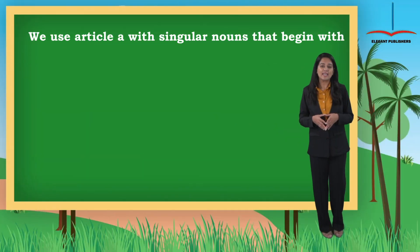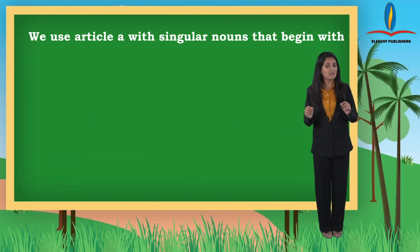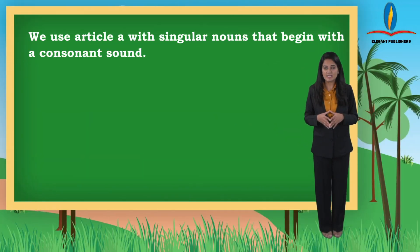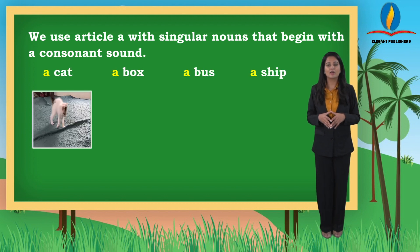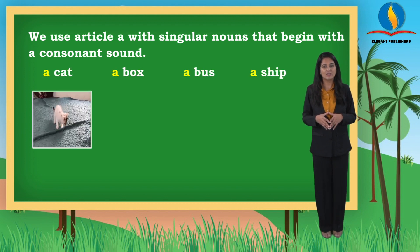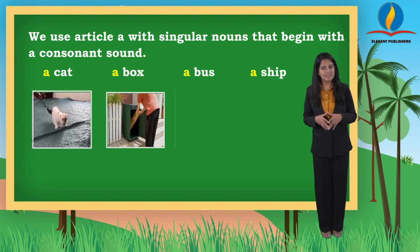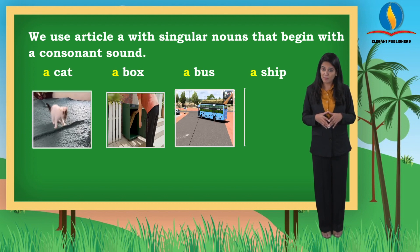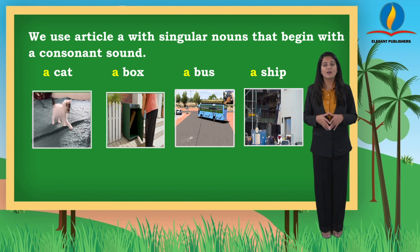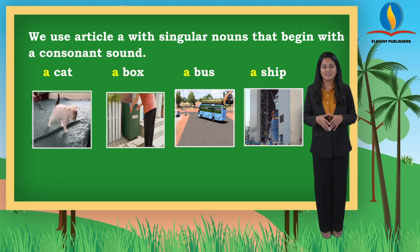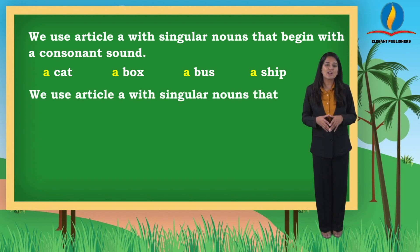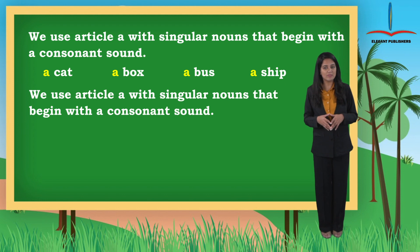We use article a with singular nouns that begin with a consonant sound: a cat, a box, a bus, a ship. We use article an with singular nouns that begin with a vowel sound.